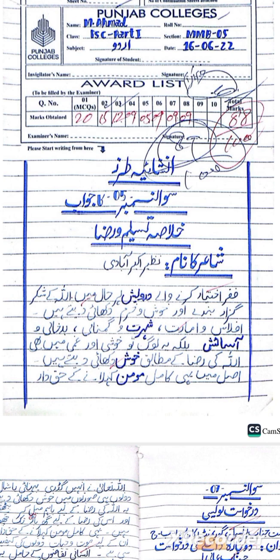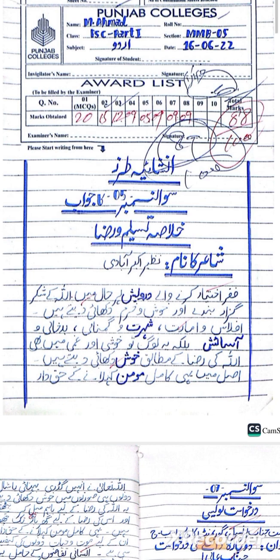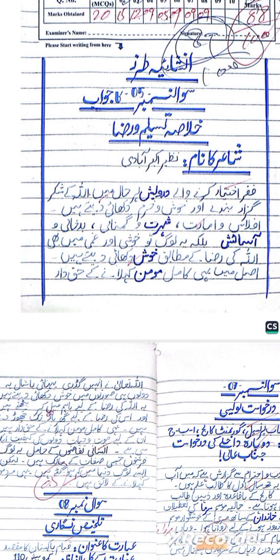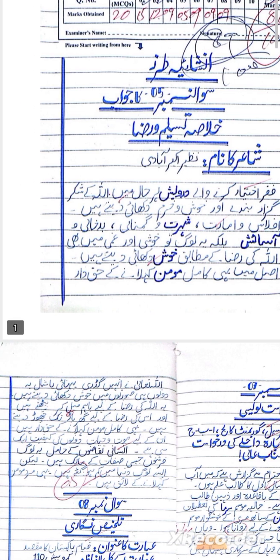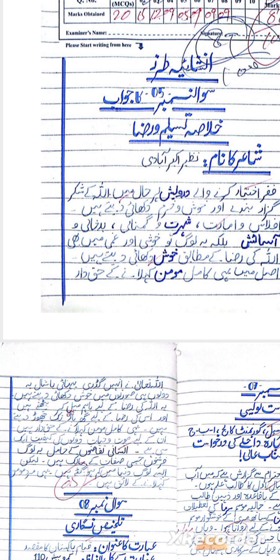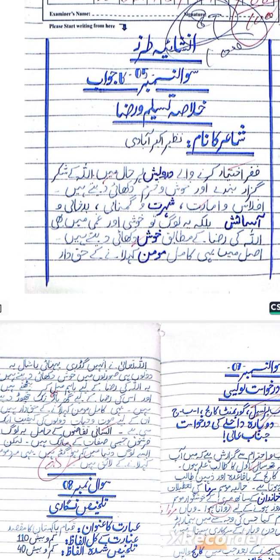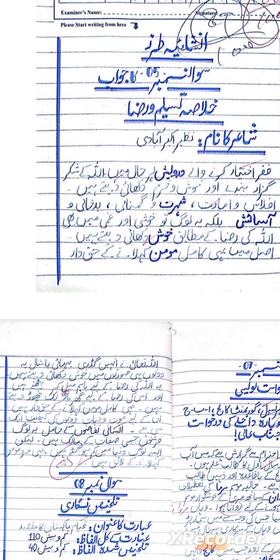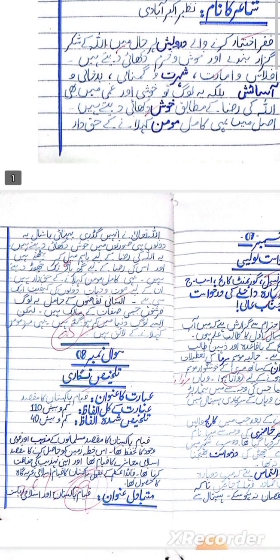Dear students, in this paper question number 5 — nazm ka khulasa — was attempted first. The student attempted the khulasa of 'Tasleem-o-Raza'. To do this, first write the poet's name with a marker at the top — that carries one mark. For the remaining four marks, pay attention to the length of the khulasa: it should be almost fifteen to sixteen lines, not more. Also highlight some important words with a marker while writing the khulasa.